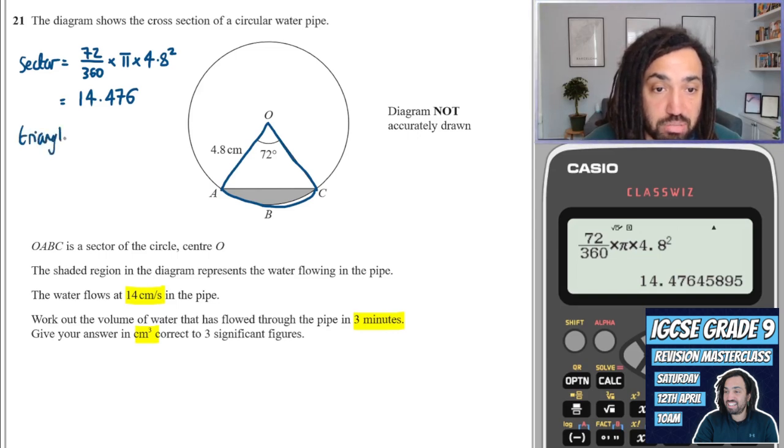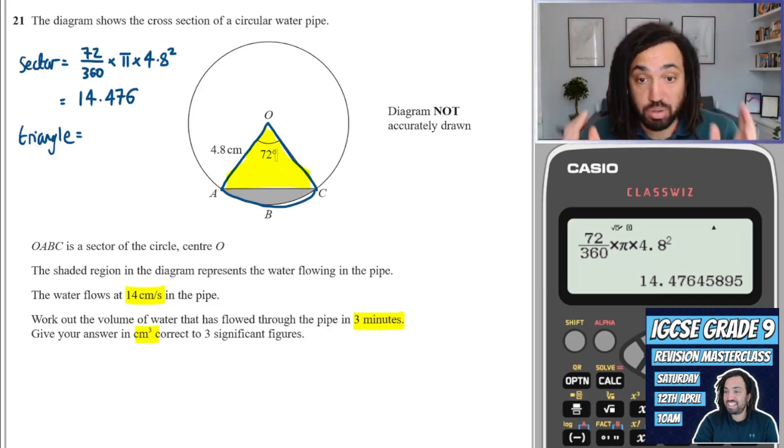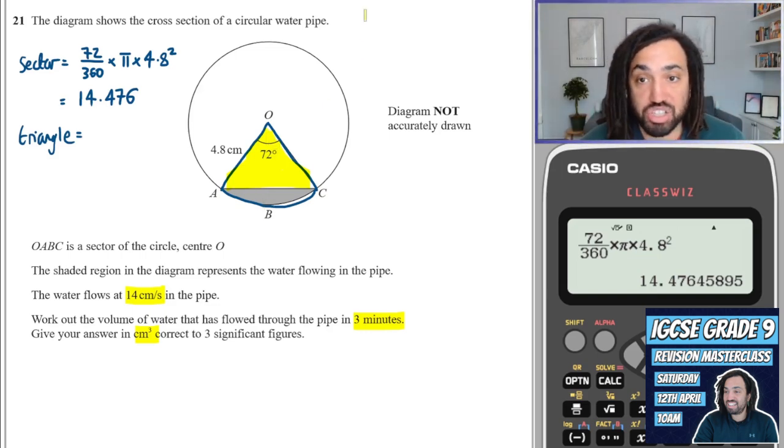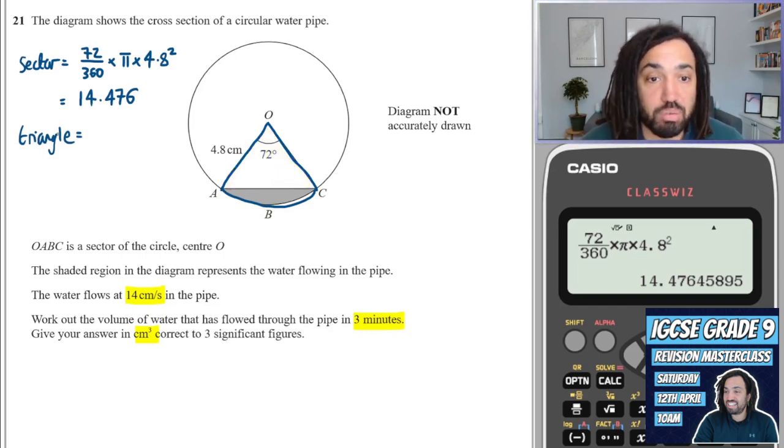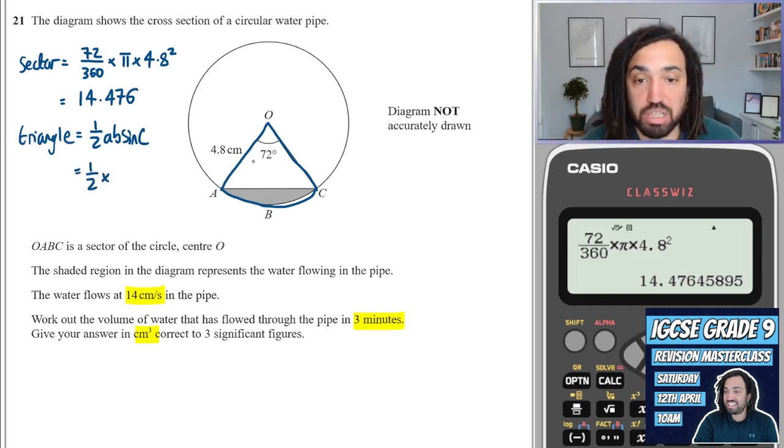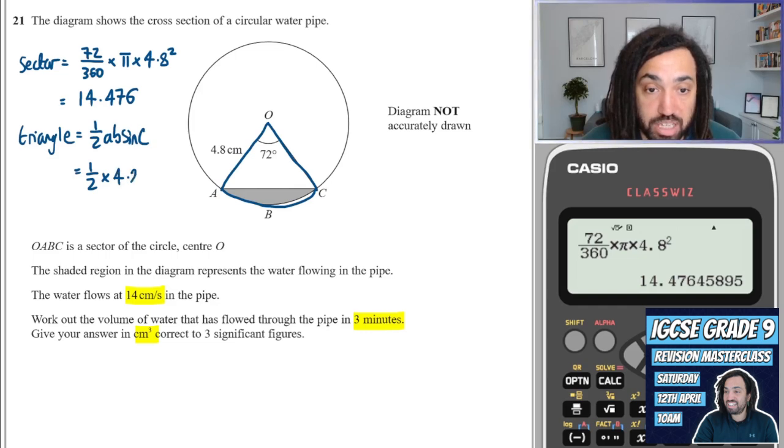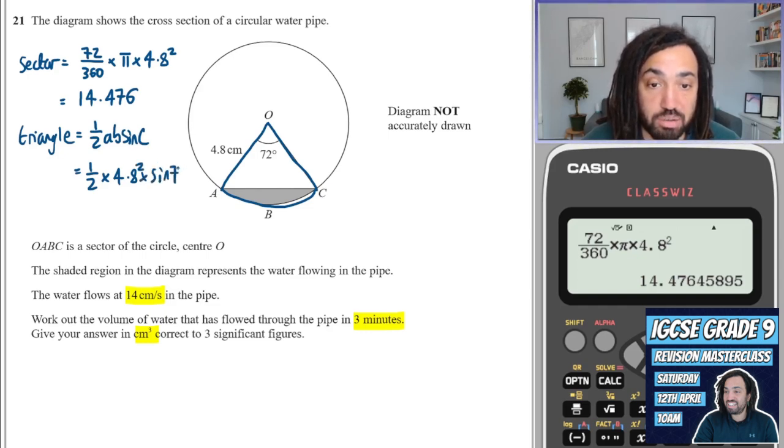Okay, so next I'm going to go to triangle. I'm going to work out the area of this yellow triangle because if I know the yellow triangle and I know the blue sector, I can subtract and I can get the shaded area. So the triangle, we're going to use 1/2 a b sine c. So that's 1/2. And remember, the c represents the angle and the a and the b are the sides that are next to the angle. So both a and b are 4.8 because they are both radii of the circle. So 4.8 times 4.8, which is the same as 4.8 squared, then times by sine of the angle, which is 72.